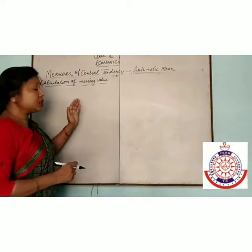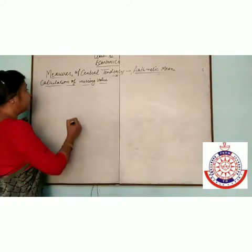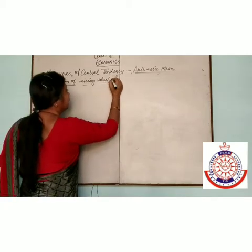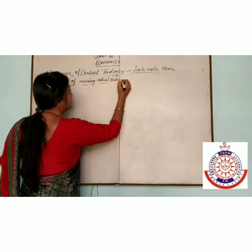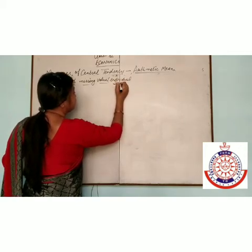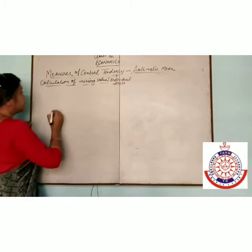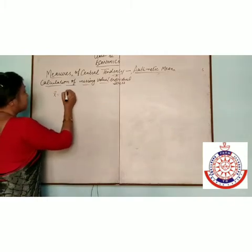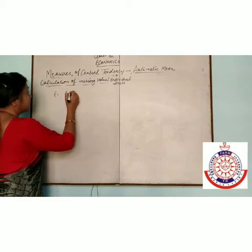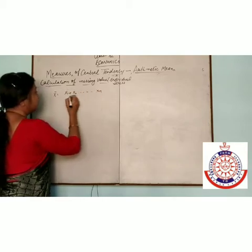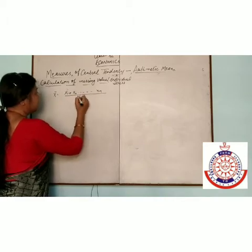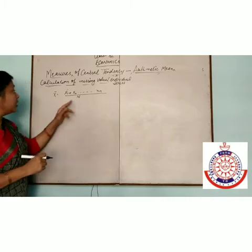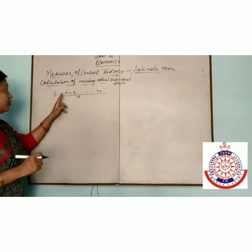The next topic is calculating the missing value. In the case of individual series, we use the direct method: x̄ = (x1 + x2 + ... + xn) / n. Here, one value is missing but the number of items and x̄ are given, so we can find the missing value.